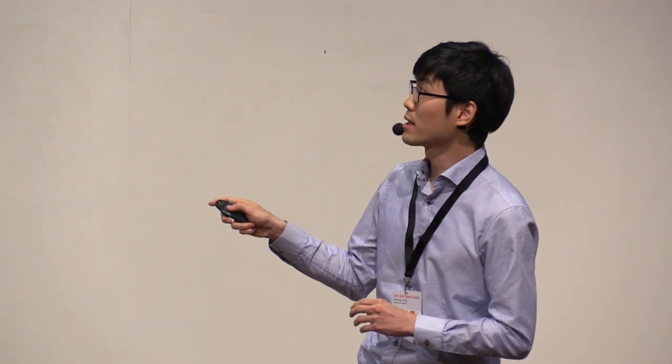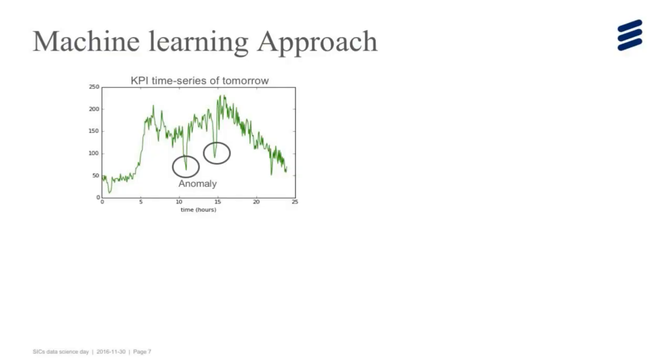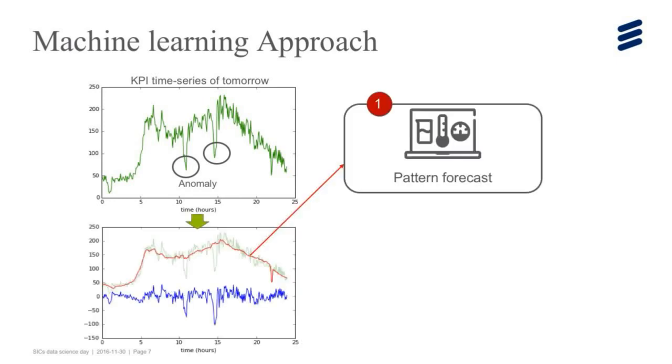So we take a machine learning based approach. Imagine the green one-day time series curve is tomorrow's time series, which is not observed, but we want to detect these two anomalies in real time. Our approach is: first, we forecast tomorrow's time series. Here the KPI is the number of users. We forecast the time series depicted in red line. And we subtract this forecast from the original data. Then we obtain the blue residual signals. Then by setting a threshold on it, we can detect these two anomalies correctly.